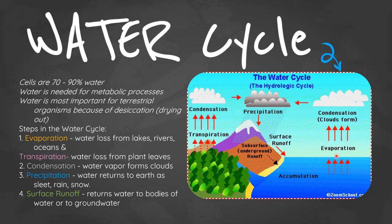Once water has evaporated, condensation occurs. Water vapor forms clouds, and eventually the clouds build up so much that they become very heavy with water vapor and begin to precipitate — what we call rainfall. The water returns to earth as either sleet, rain, or snow.